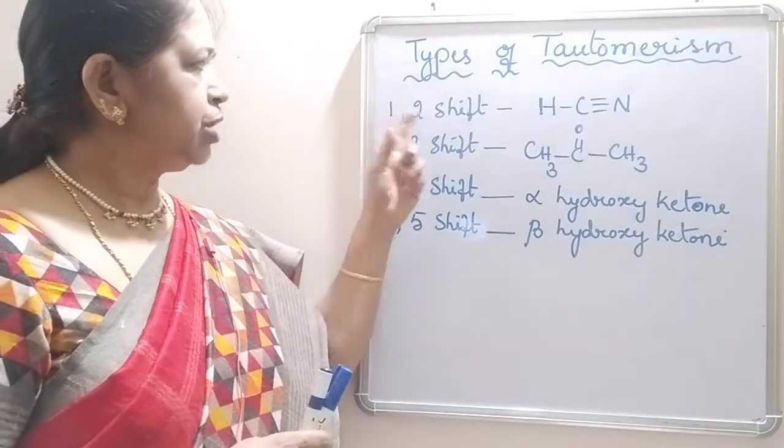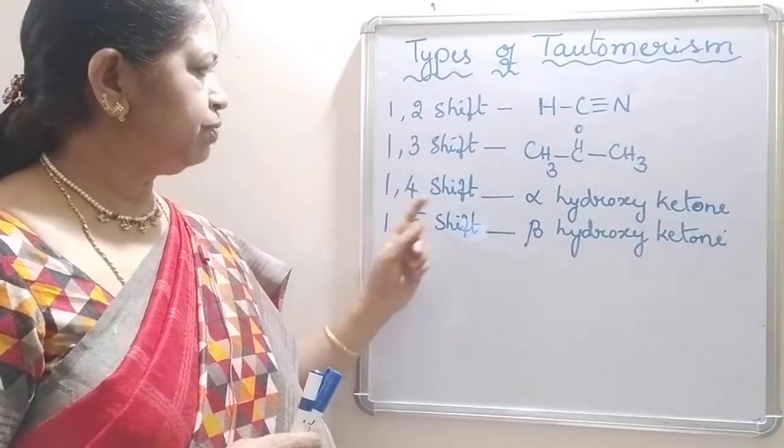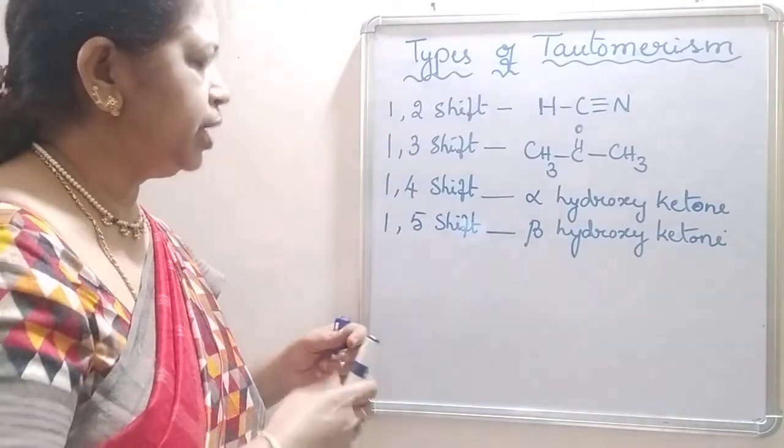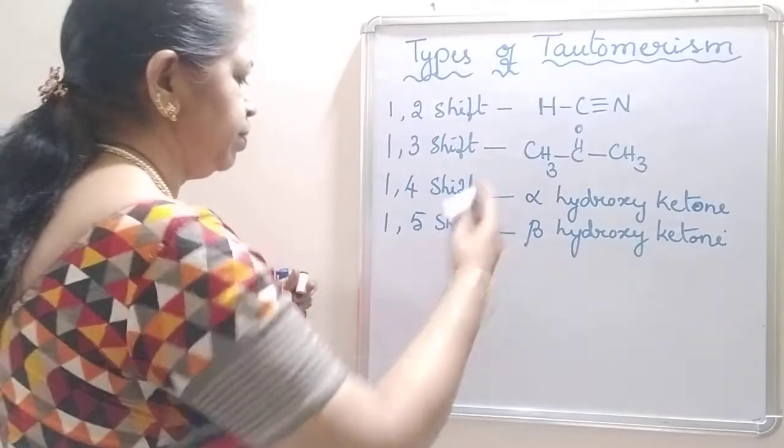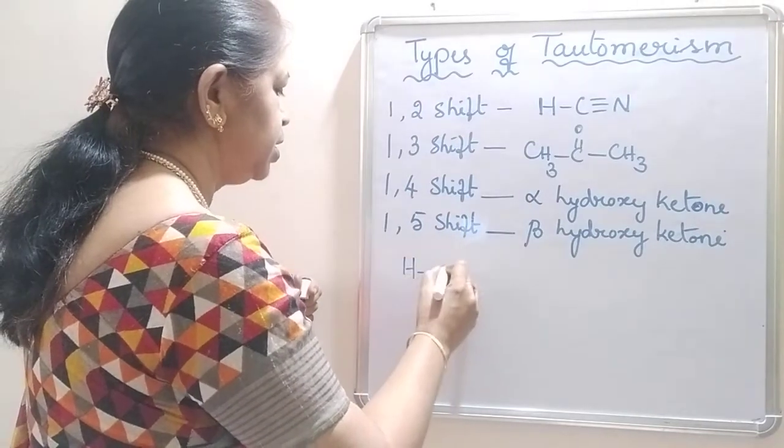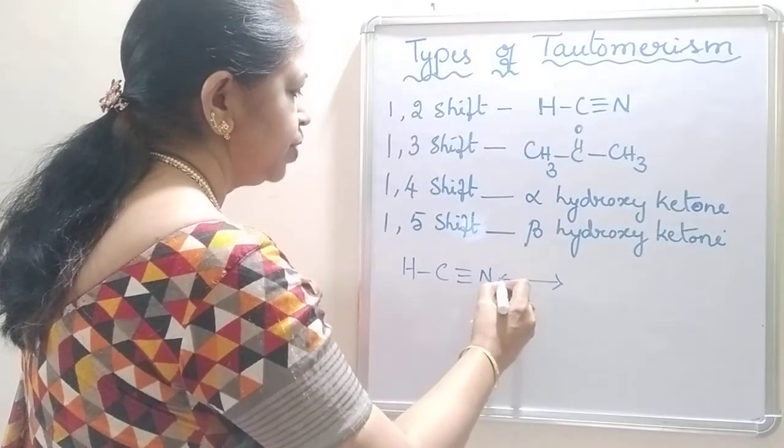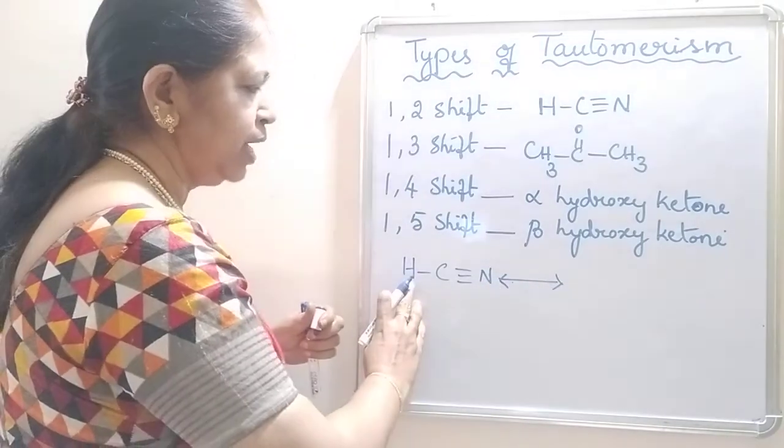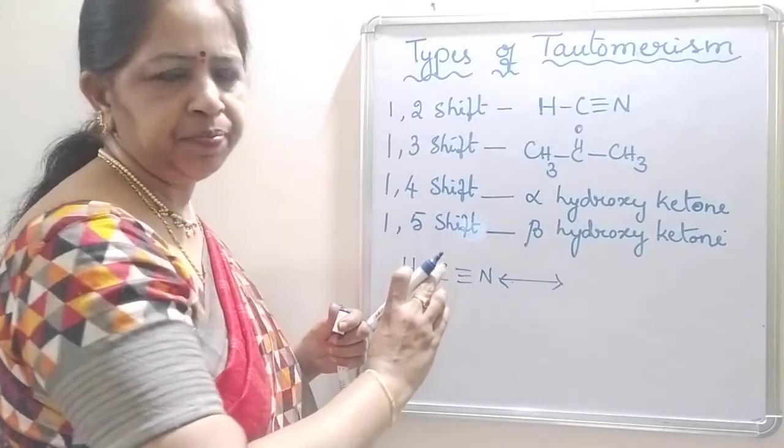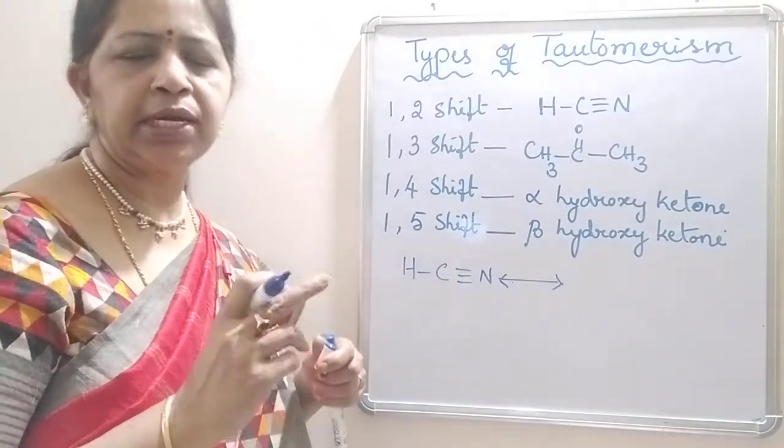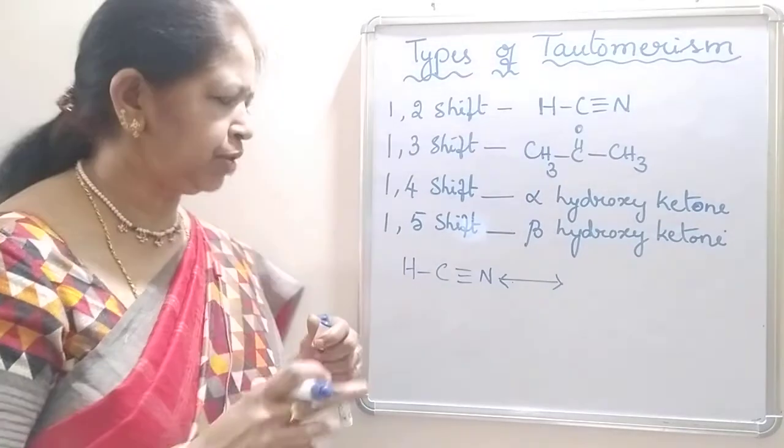1-2 shift, 1-3 shift, 1-4 shift, and 1-5 shift. For 1-2 shift, the example is HCN, H-C triple bond N. 1-2 shift is if the hydrogen migrates to the adjacent atom. If the shifting occurs between adjacent atoms, that is known as 1-2 shift.